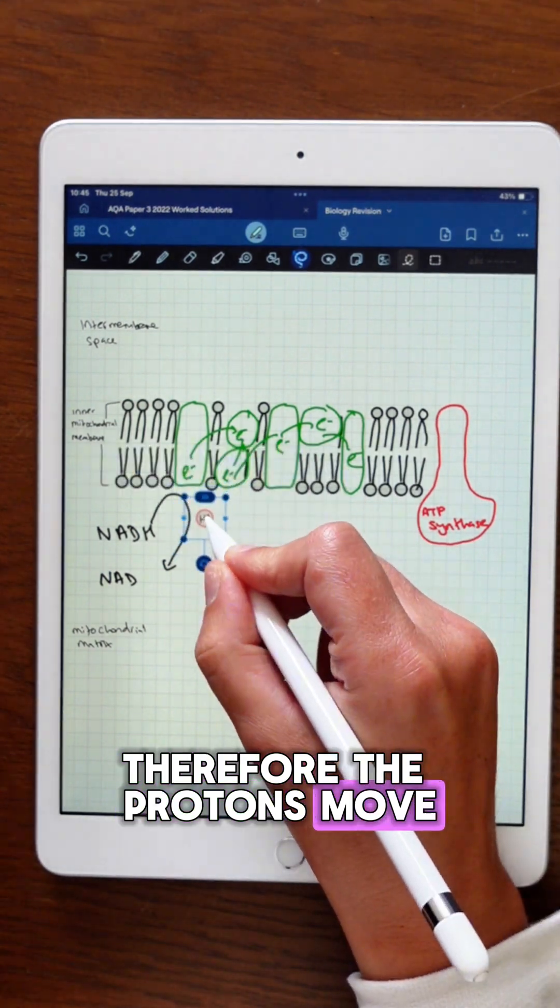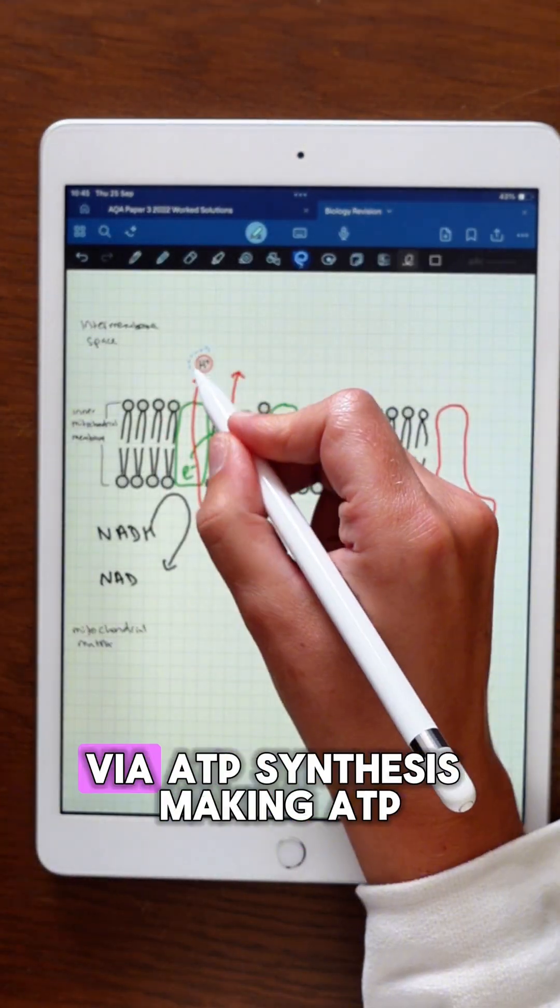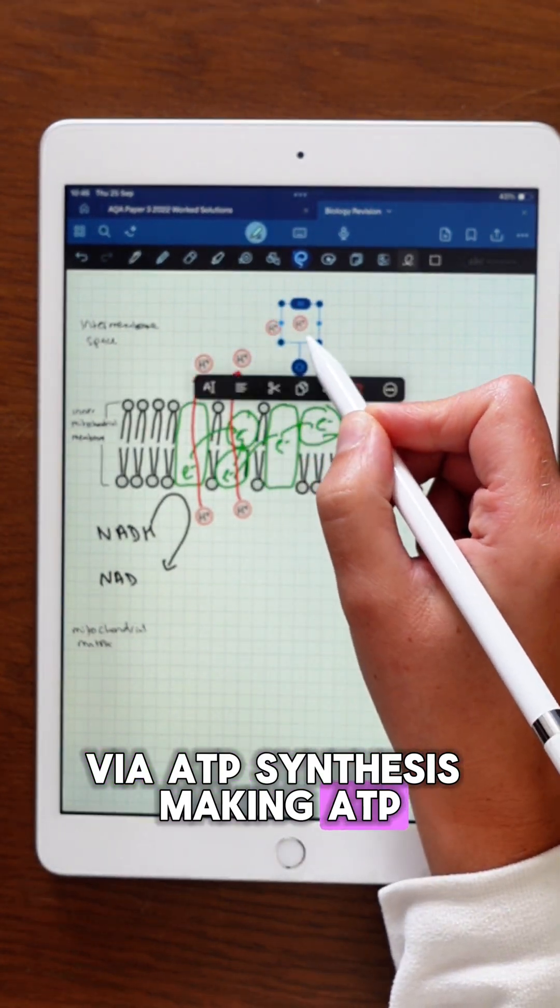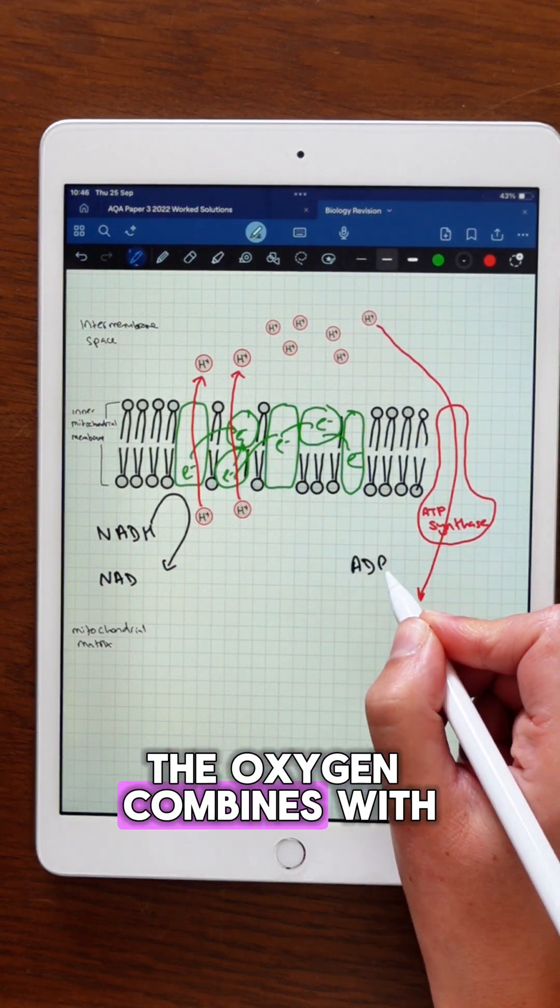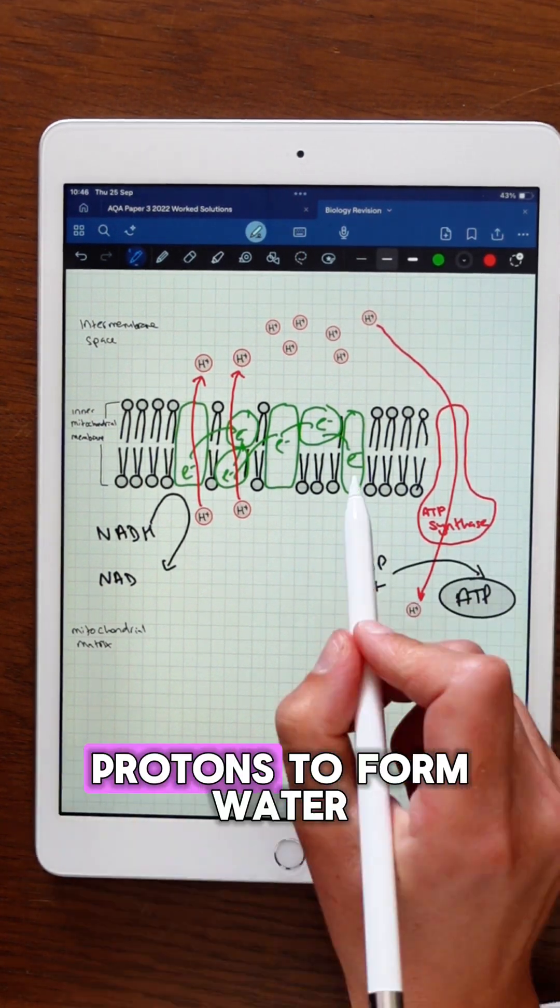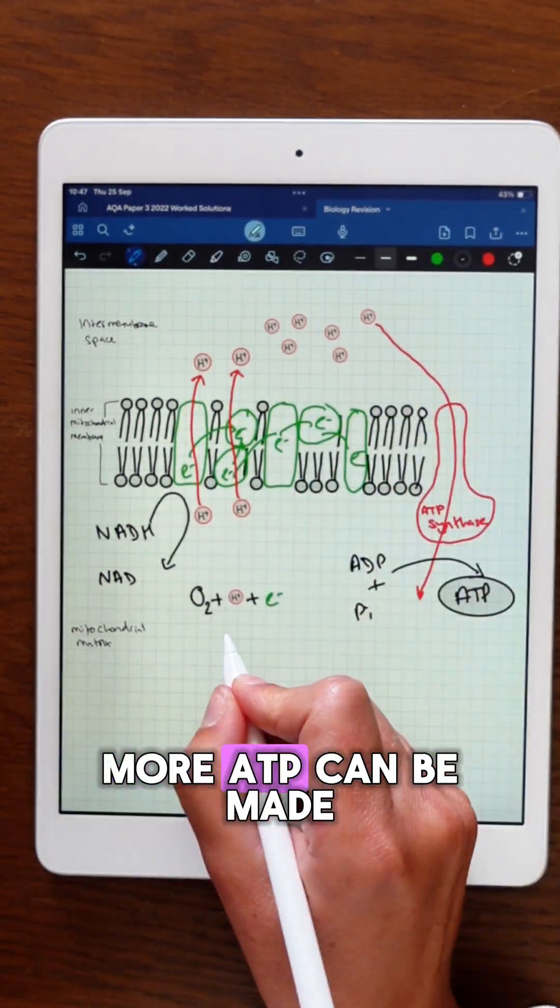Therefore, the protons move down the electrochemical gradient back into the mitochondrial matrix via ATP synthase, making ATP. Oxygen is the final electron acceptor in the electron transfer chain. The oxygen combines with the electrons and the protons to form water, and this enables the process to continue so more ATP can be made.